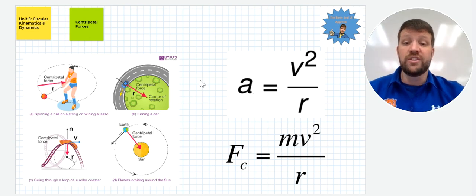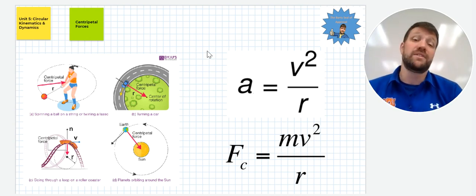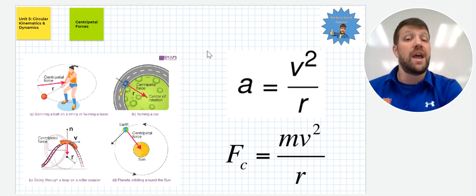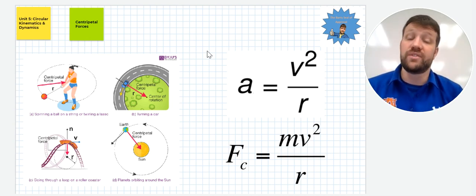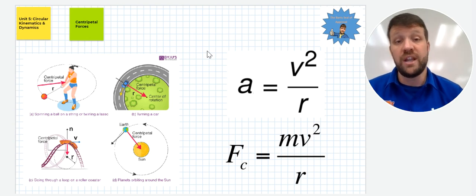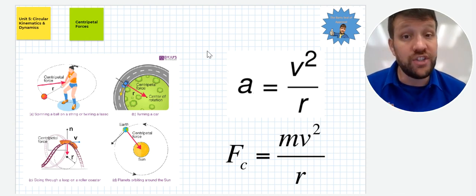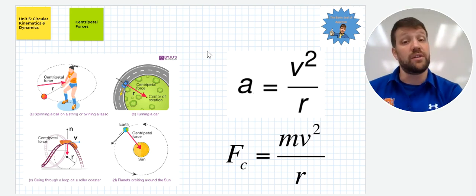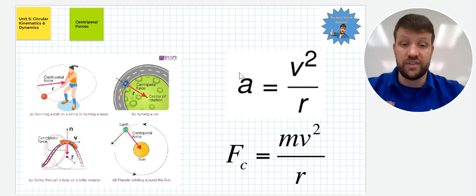Now, in order to have this, we need to have an acceleration for there to be this force here because force is mass times acceleration. This can all happen without a change in velocity of the object that's moving in a circular path. Remember, acceleration is defined as a change in velocity. Velocity is defined as having both a direction and a magnitude. Well, if the magnitude doesn't change but the direction does change, we still have an acceleration. And this is known as a centripetal acceleration.